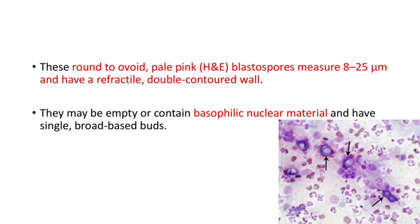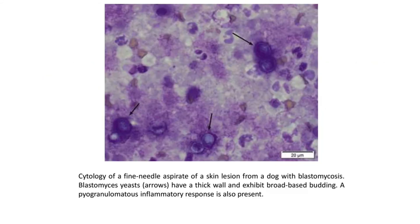These round to ovoid, pale pink H&E-stained blastospores measure 8 to 25 micrometers and have a refractile double contour wall. They may be empty or contain basophilic nuclear material, and have single broad-base buds - the peculiar feature of this spore with its double-contoured wall. Cytology of a fine needle aspirate of a skin lesion from a dog with blastomycosis: Blastomyces yeast shown by arrow have a thick wall and exhibit broad-base budding. A pyogranulomatous inflammatory response is also present.